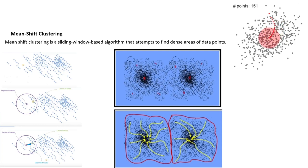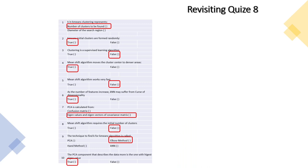Out of all clustering algorithms, k-means and mean-shift are the ones you should know by heart — they are the most widely used. Revisiting the quiz: k in k-means represents the number of clusters to be found; k-means initial cluster centers are formed randomly; and mean-shift algorithm moves the cluster center toward denser areas — that's basically the idea behind mean-shift.